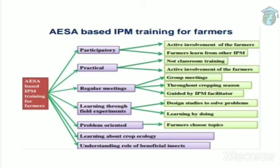Next is learning about crop ecology and understanding beneficial insects and natural enemies. In IPM, the main aim is to avoid chemical fertilizers or pesticides and do things in a natural way. If we want to avoid pesticides, the alternative is beneficial insects. Farmers will be taught how to use beneficial insects and also how to increase the population of a particular beneficial insect. This will all be included in AESA training.